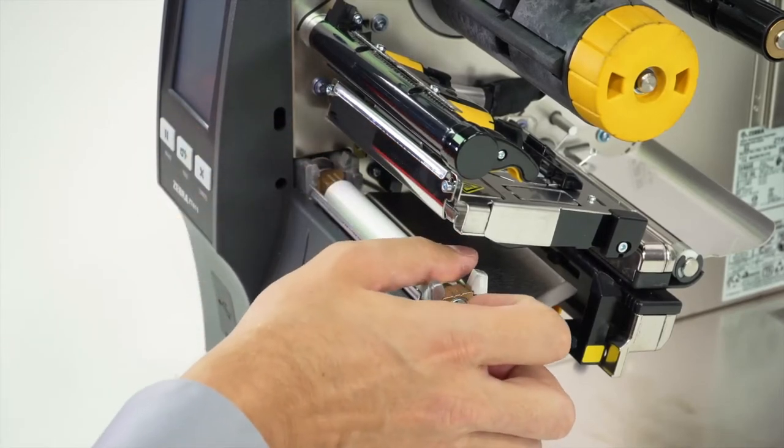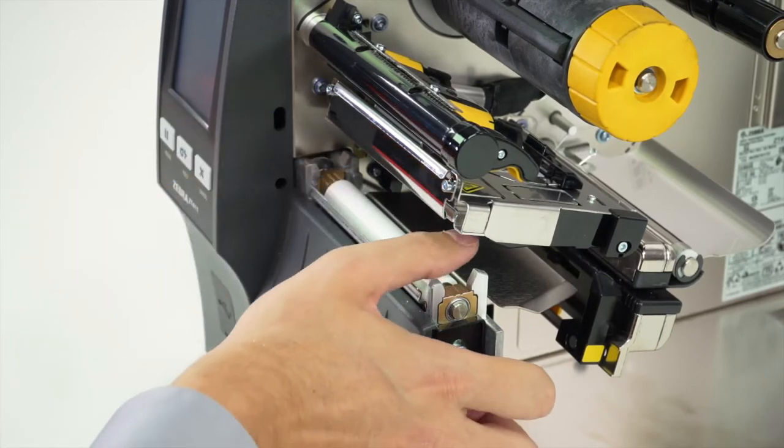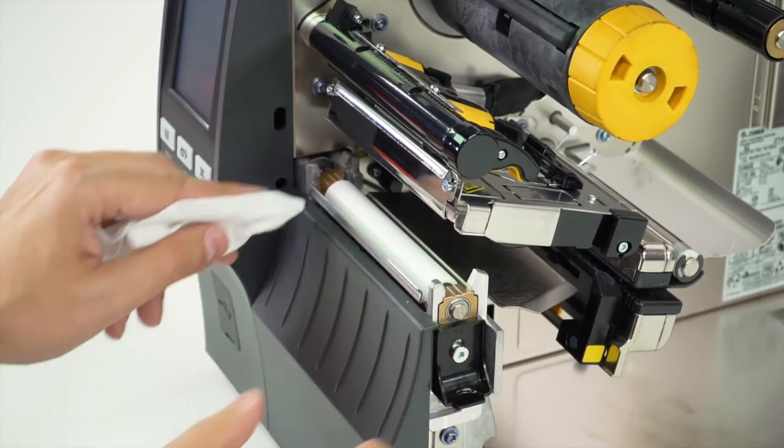To clean the platen roller, wipe with a swab or lint-free cloth moistened with a solution of 9 parts isopropyl alcohol and 1 part deionized water. Allow the solvent to evaporate.